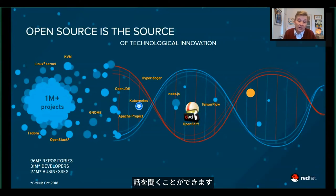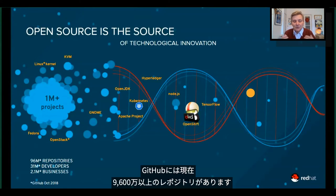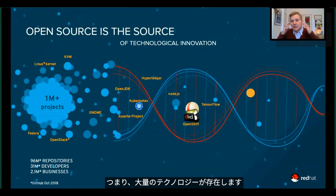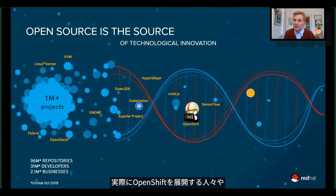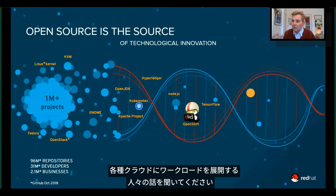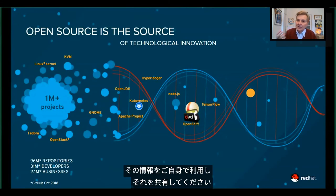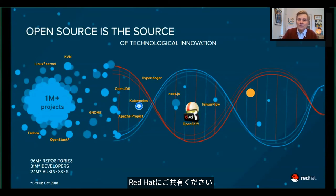Whether innovation comes from end users, partners, internal Red Hat teams, or collaborations with cloud hosting providers — including people you might have thought were competitors — you're going to see all of them here today. It is a firehose of information. Looking at GitHub today, there are surely more than 96 million repos. So use today to hear the best practices and lessons learned from end users on the ground floor of OpenShift deployments, deploying workloads on OpenShift, Kubernetes, and multiple clouds.